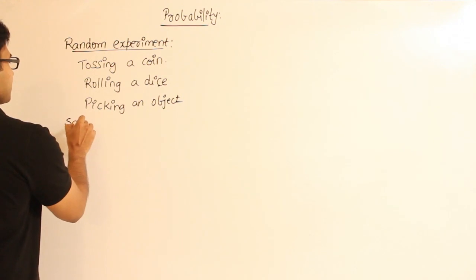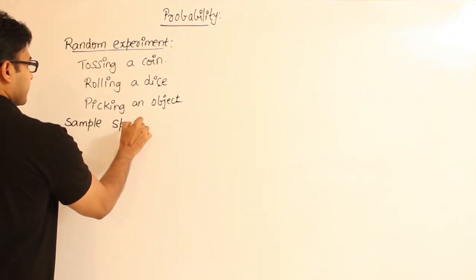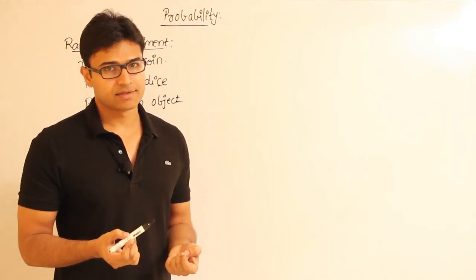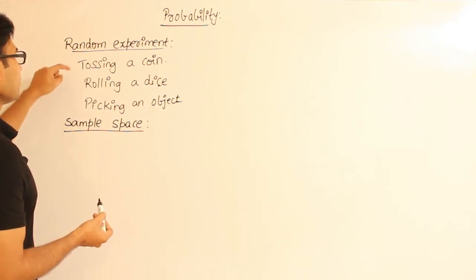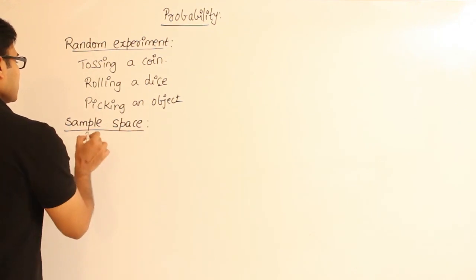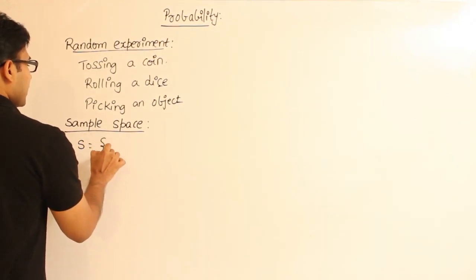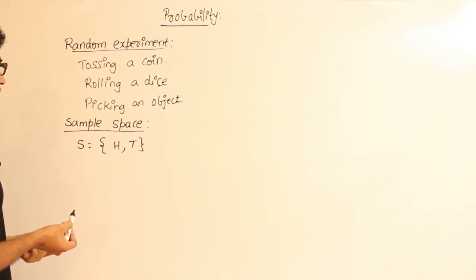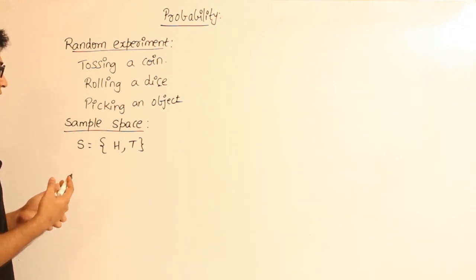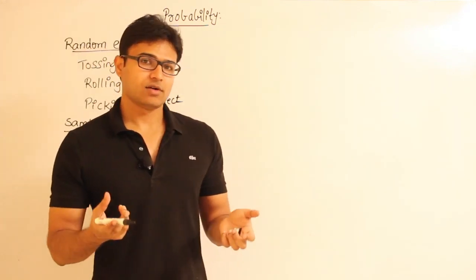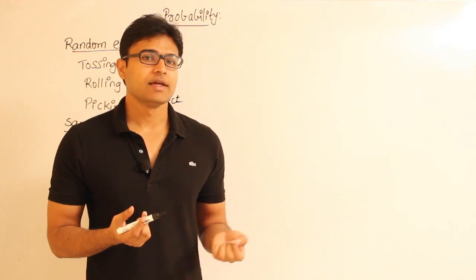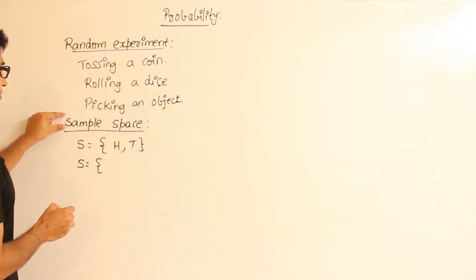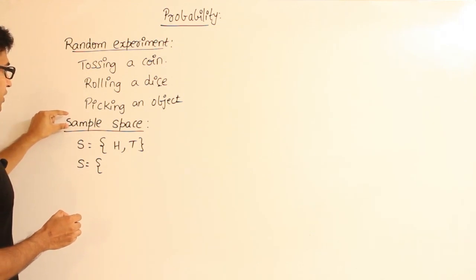After knowing about random experiment, the next concept is sample space. The sample space is the set of all possible outcomes of an experiment. For example, if the experiment is tossing a coin, then the sample space is simply head or tail. These are the conventions we follow so that when talking about problems, we use the same terminology. Sometimes textbooks use the name sample set or domain space, but most textbooks use the term sample space.